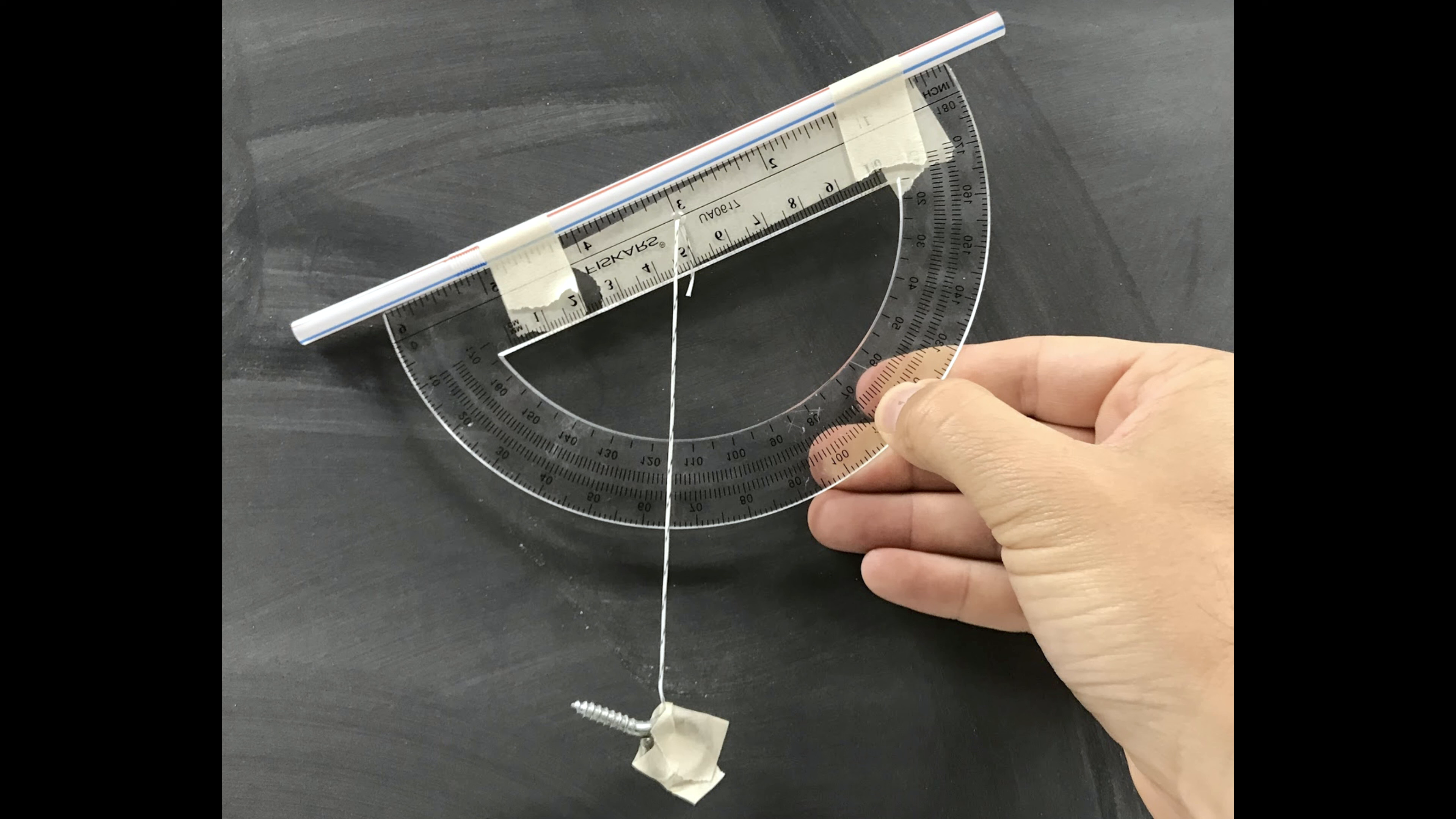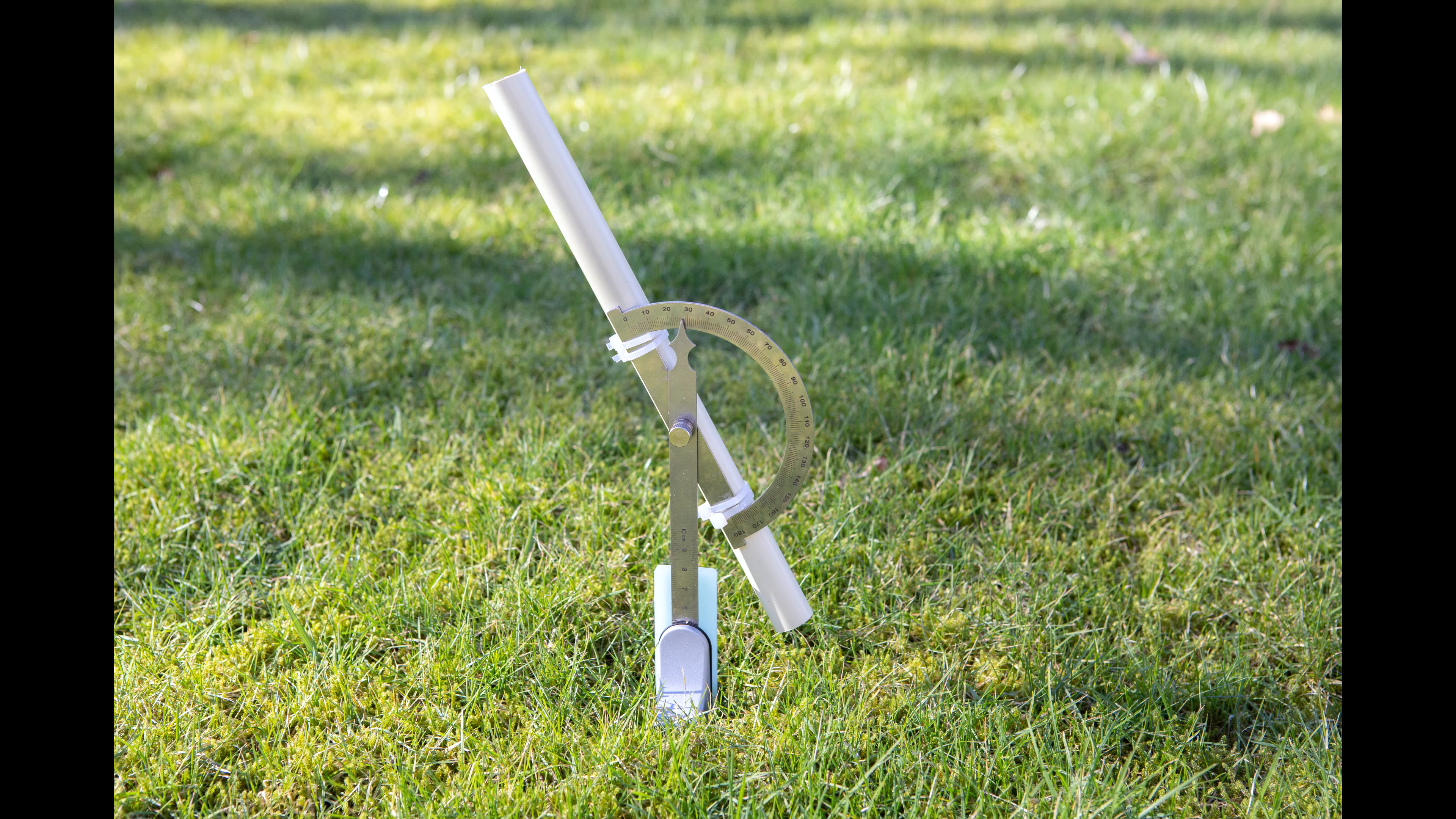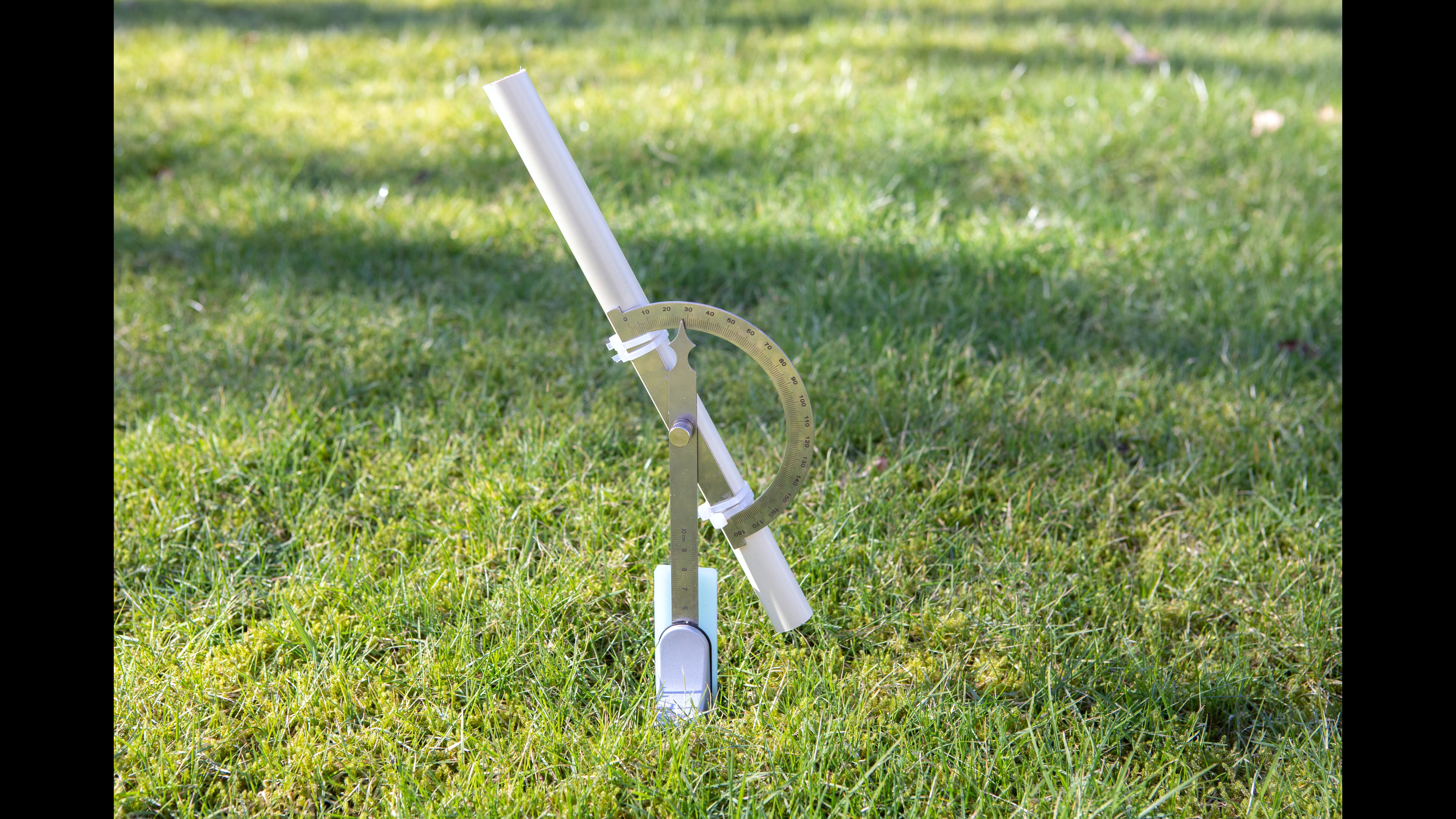All you need is an angle measure, a string, some counterweight, and some tape. Here's the first one I built. I found a straw to be too narrow to see Polaris through, so I used a PVC pipe.